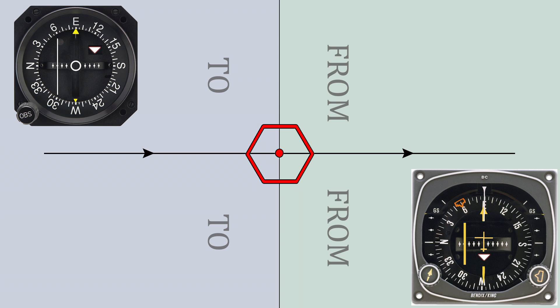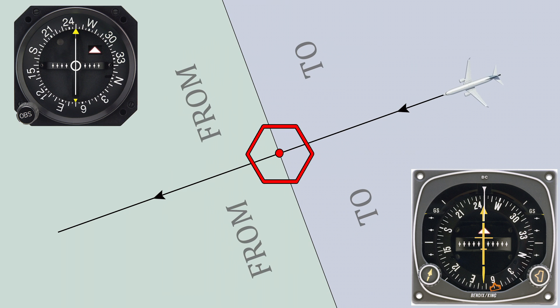If we select a course of 250 degrees and want to fly it towards the station, we need to fly along the radial 070. If we get off course, for example, to the radial 064, that means we deviated 6 degrees to the right. That means our course line is now to the left of us, which is also indicated by the needle that moved to the left. This means a turn to the left is needed to get back on our course.